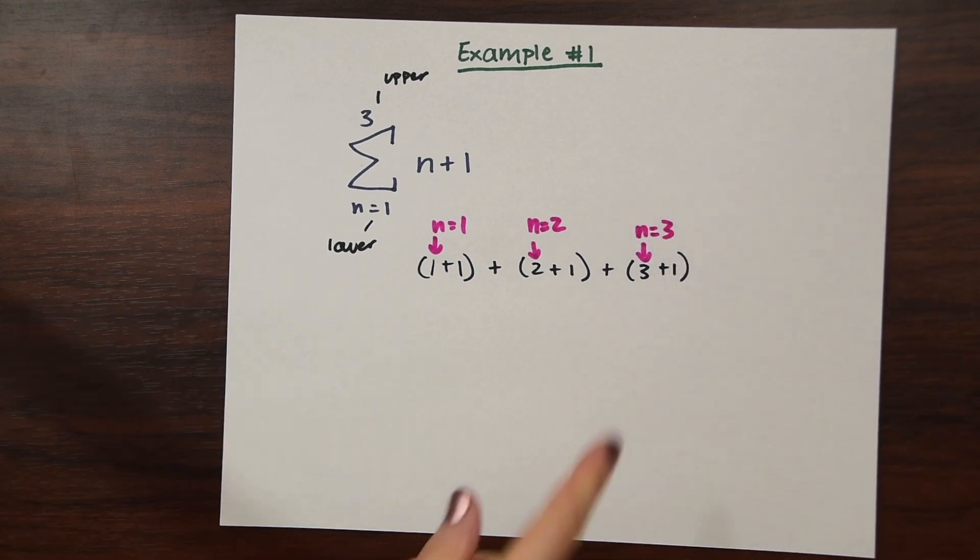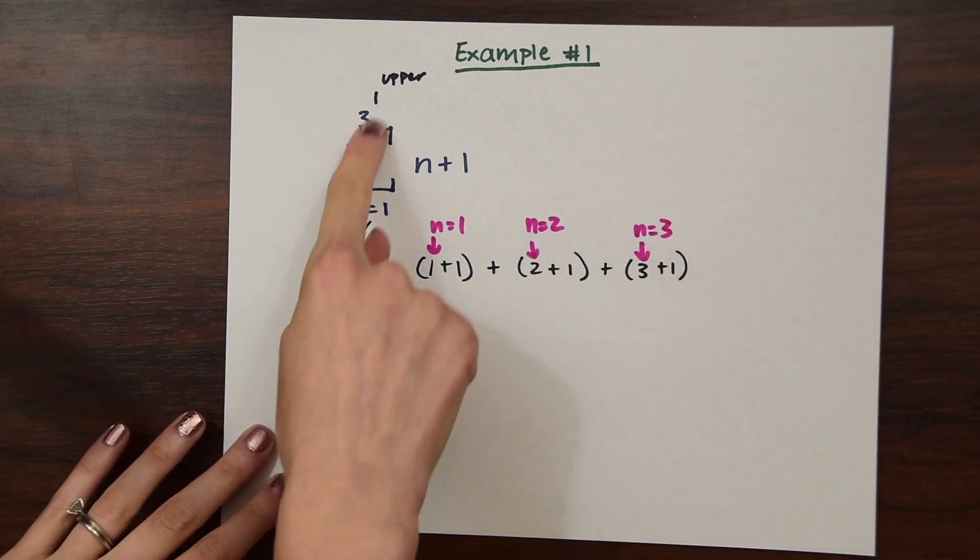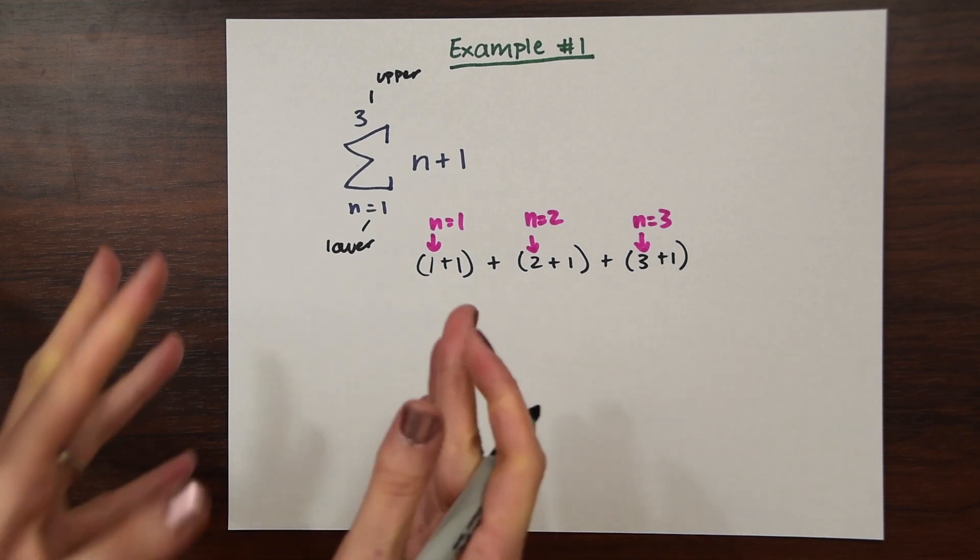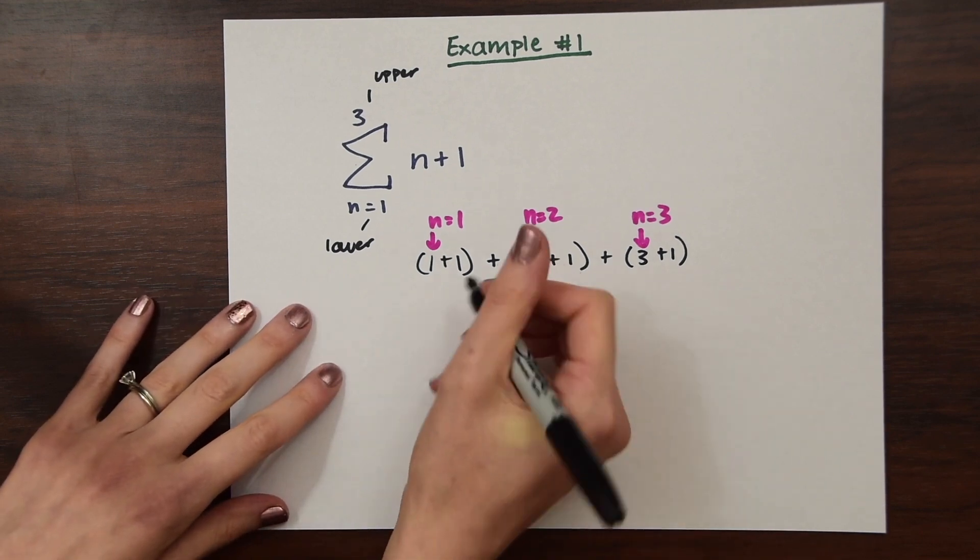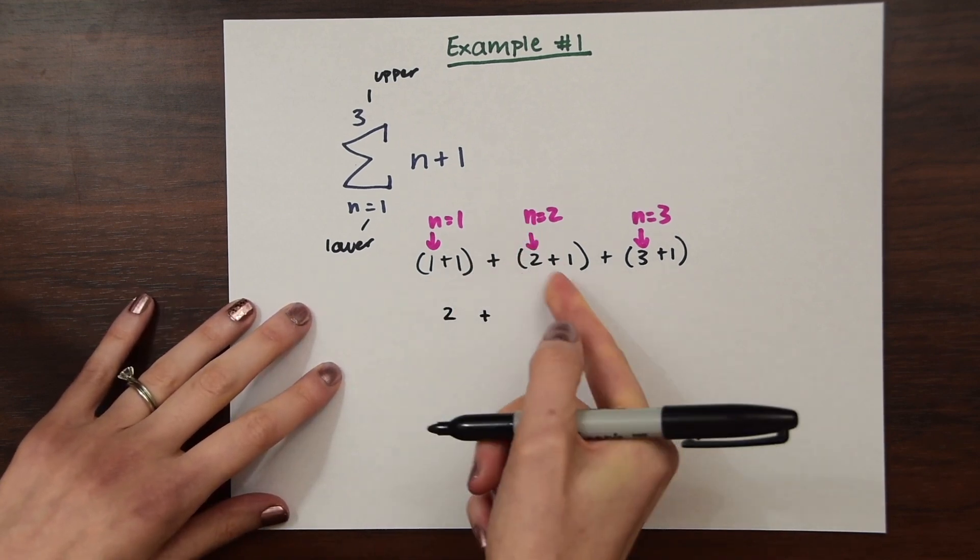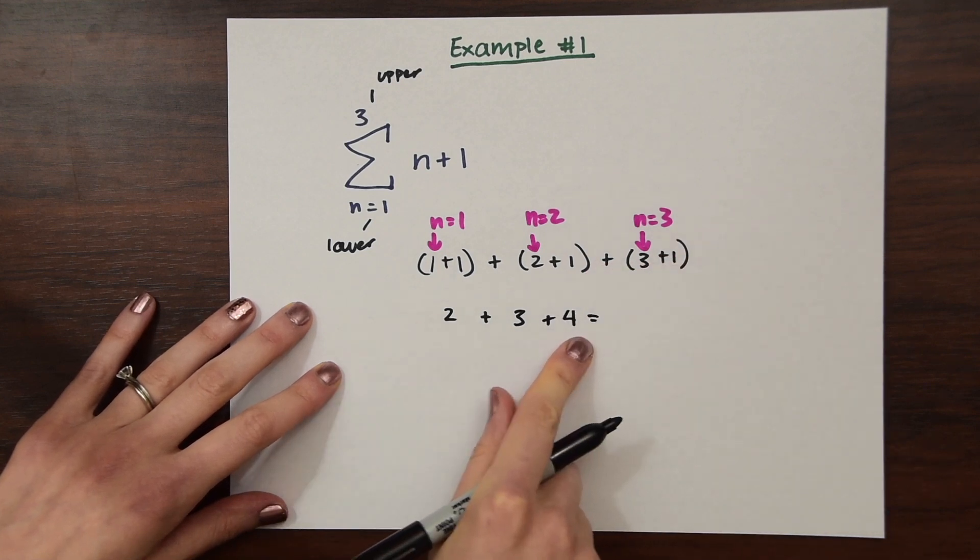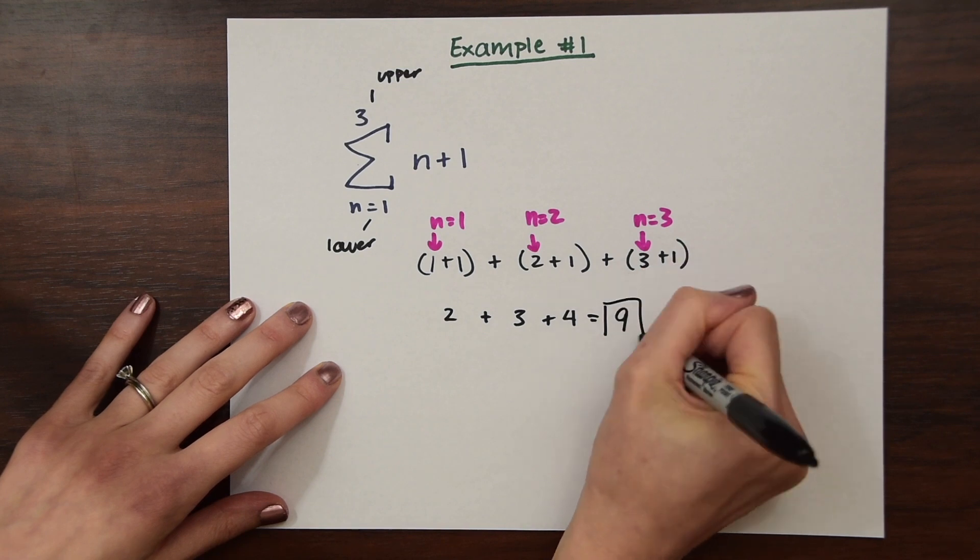And that's all we need to do. Those are the only numbers that we need to plug in for n because that's what this summation tells us. So now we just need to calculate everything, each little mini group here within the parentheses together. So 1 plus 1 is 2, 2 plus 1 is 3, 3 plus 1 is 4. And then add these all together and we get 5 plus 4 which gives us 9. And that's our answer.